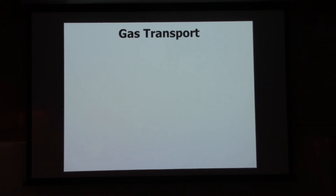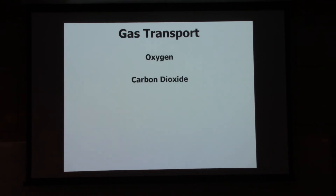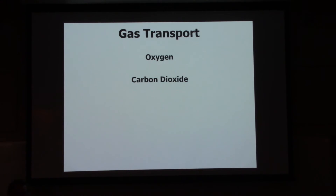Gas transport. Once these gases are in our blood, how do they get transported around in the cardiovascular system? The gases of interest are oxygen and carbon dioxide. Do we just have bubbles of oxygen in our blood moving around? No. Hopefully not - that would be a big problem.